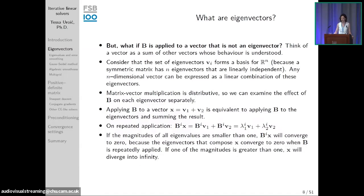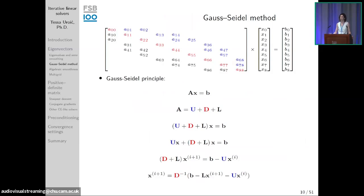We can write any vector — for example the error vector, which we want to drive to zero to reach the exact solution — as a linear combination of eigenvectors. This allows us to monitor individual components of the error and identify those which converge the slowest — those which will be eliminated last. This understanding motivates the Gauss-Seidel method, which is greatly affected by the eigenvalues of the iteration matrix.